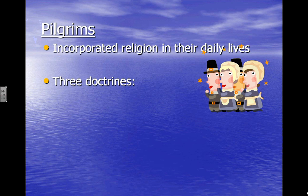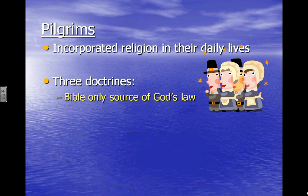The three doctrines of the Puritan belief system are kind of complicated, but we're boiling them down into a pretty simplistic explanation. The first of the three doctrines is that the Bible is the only source of God's law. Many Christian belief systems still follow this today. But what that really means is the Puritan said: I don't have to rely on a priest or clergyman to interpret the Bible for me — I can read it myself, I can figure it out myself.